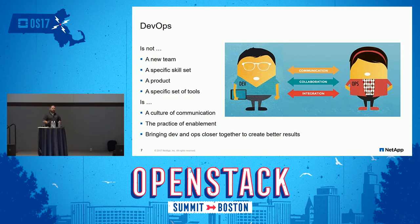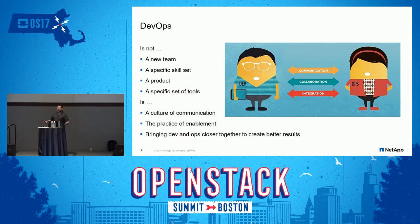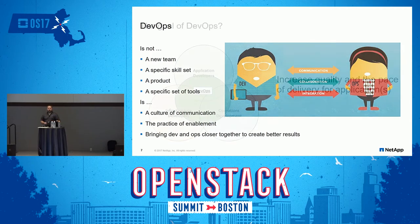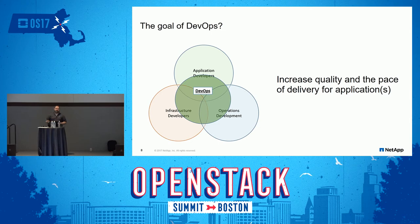DevOps is not a fancy set of tools. Using Jenkins doesn't automatically mean you're doing DevOps. DevOps is collaborating — it is communicating — it is development and operations working together to facilitate a better outcome. I cannot make a developer write better code, but I can ensure that what comes out on the other end is better quality. Ultimately, DevOps is the practice of enablement: increasing the quality and the pace of delivery for applications.